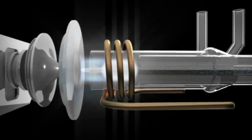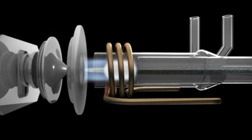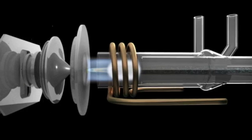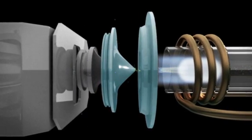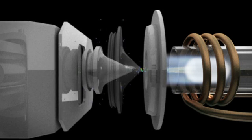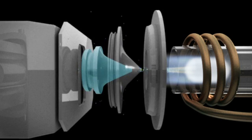As ions leave the plasma in the Nexion 300 ICP-MS, they pass through a unique dual-chambered interface consisting of three cones that produce the most controlled and tightly defined beam available in any ICP-MS system. In addition to the sampler cone and skimmer cone typically found on other instruments, the spectrometer also features an innovative hyper-skimmer cone.